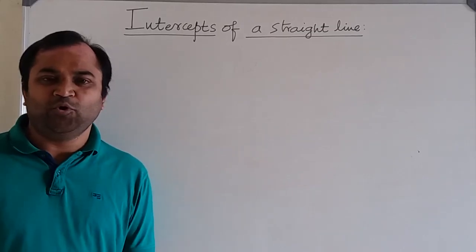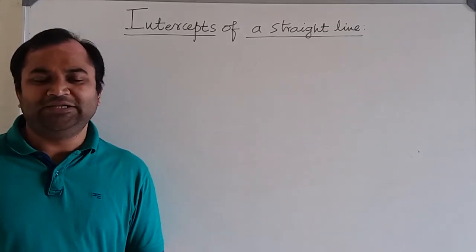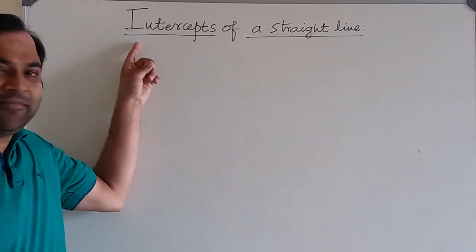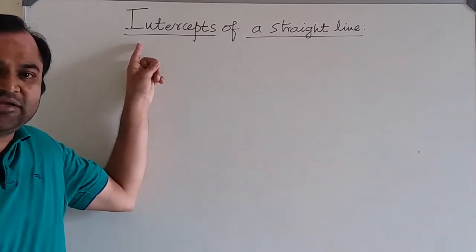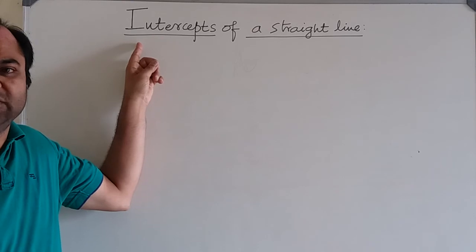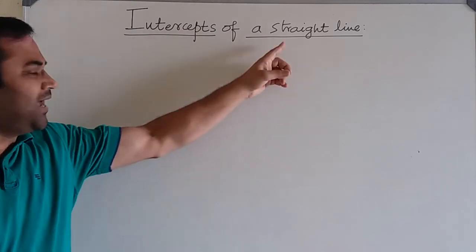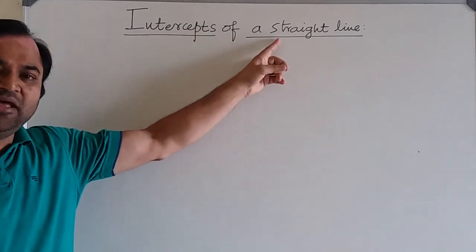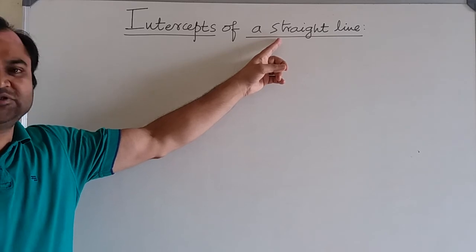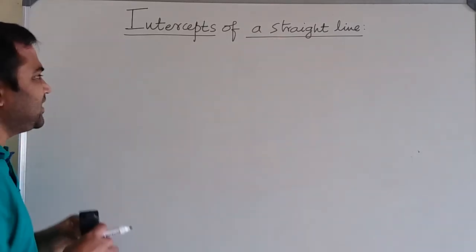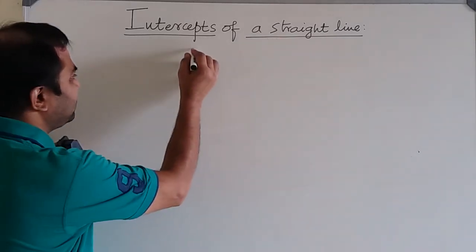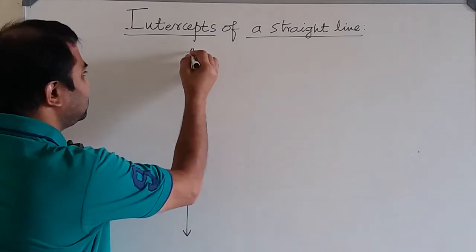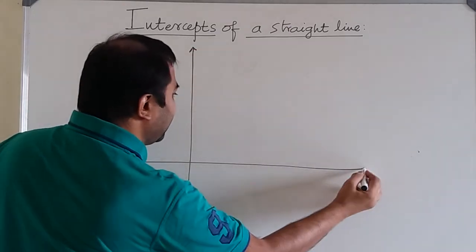Hi, welcome to mathforallgrades.com videos. This video is about how to find intercepts of a straight line. Before that, I will define what is meant by intercepts of a straight line. Consider this — this is your y-axis, and the horizontal line is the x-axis.